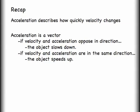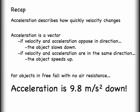To recap, let's look at the important points. First, acceleration describes how quickly velocity changes. Acceleration is a vector. If velocity and acceleration oppose each other in direction, the object slows down. If velocity and acceleration are in the same direction, the object speeds up. For objects in free fall with no air resistance, acceleration is always 9.8 meters per second squared down no matter what the ball is actually doing in the air, being going up, stationary at the top, or coming back down.